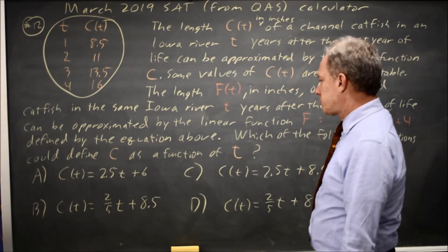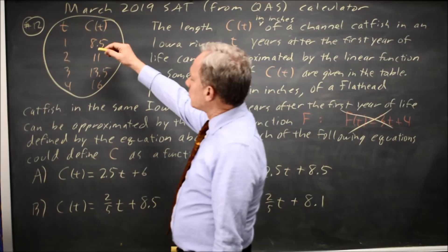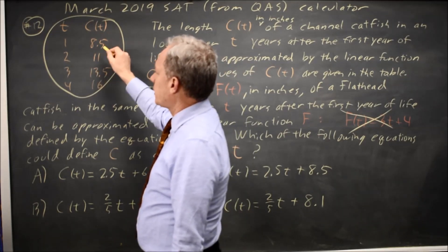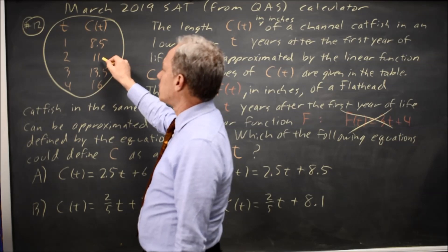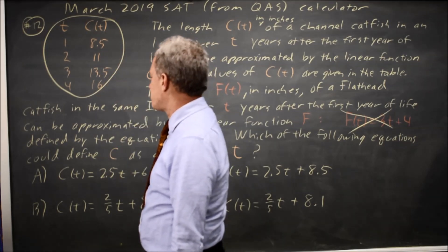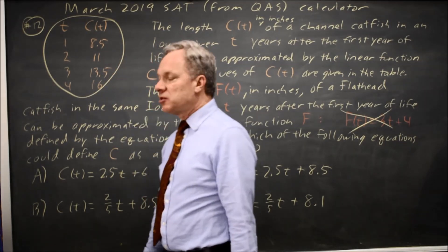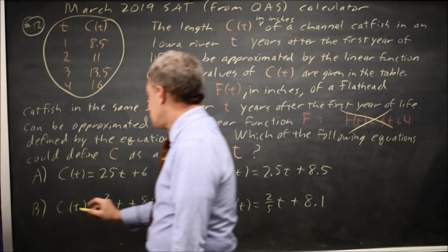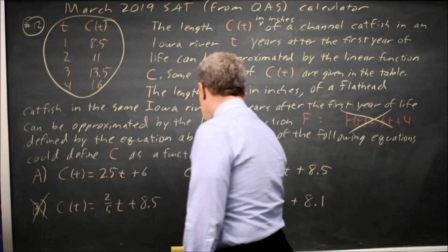The question is which function can find C as a function of T? And if I look at C of T, when T goes up by 1, C of T goes up from 8.5 to 11, that's 2.5. 11 to 13.5 is another 2.5. So my slope is 2.5 in a linear equation which would be A or C. It is not B and it is not D.